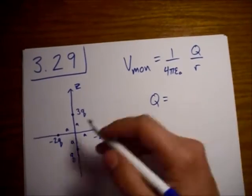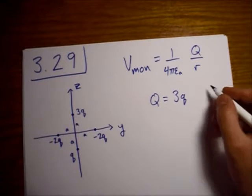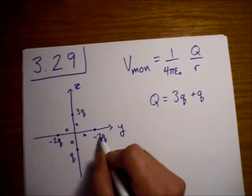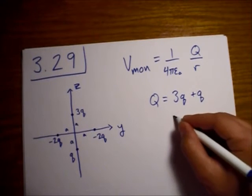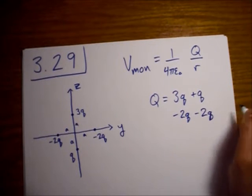let's go ahead and find the total charge. It's easy, right? We've already summed it up. It comes out to 0. We have 3q plus q down here. And then we have a minus 2q and a minus 2q.